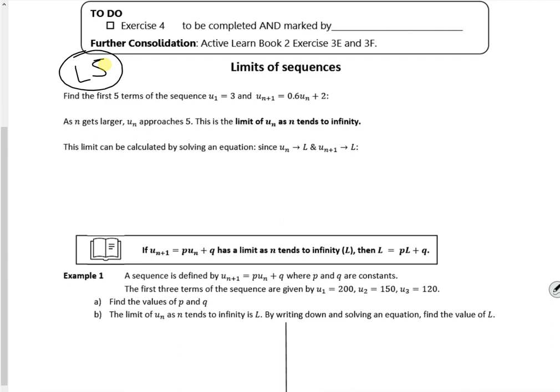So you have to be careful because the wording will say sum to infinity. Now we have something else which can be a little bit more confusing, and it's called the limits of a sequence. And the reason it's confusing is because it says as n tends to infinity in the question. So if you're not careful, you do the sum to infinity. So the idea of this one is that eventually the term stays the same.